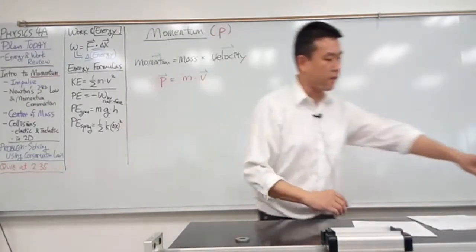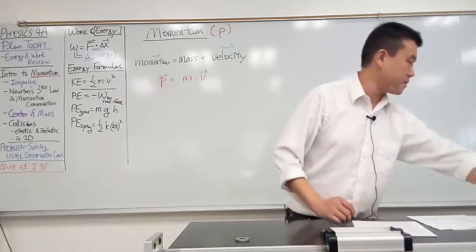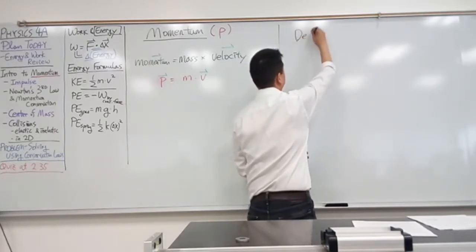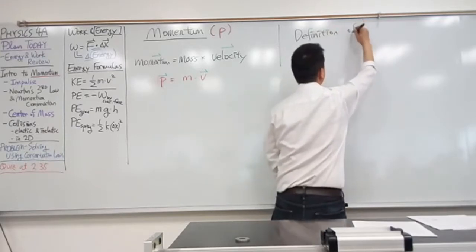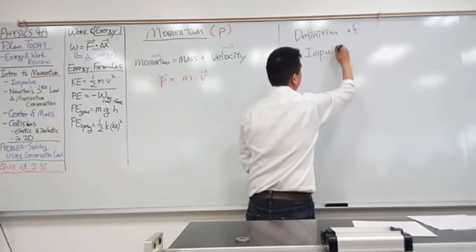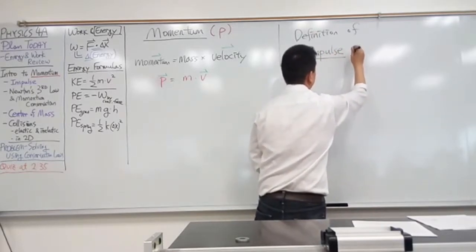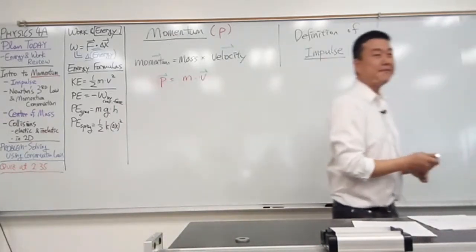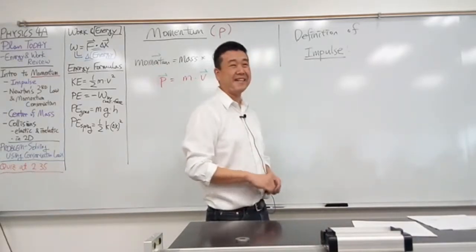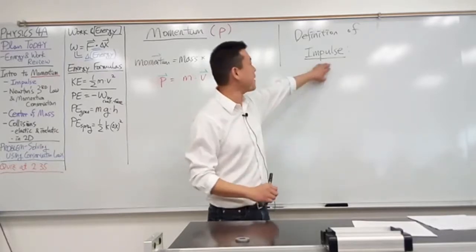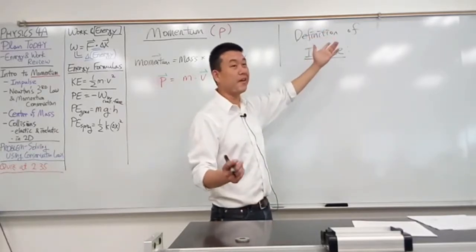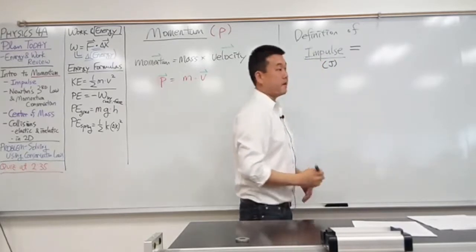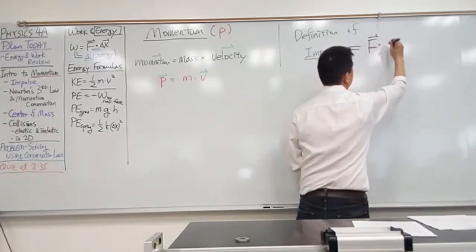Let me introduce something that we call impulse. It's just a word you have to know — I won't try to give it a deep intuitive meaning; it's simply defined. Your textbook uses the letter J, but I'll just spell out 'impulse.' Impulse is defined as force times duration of time.